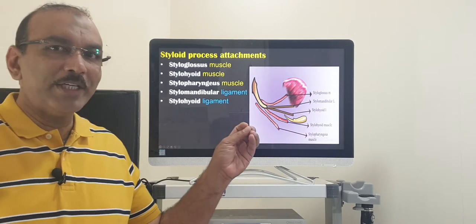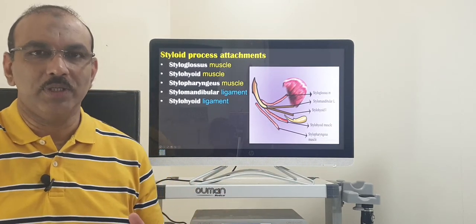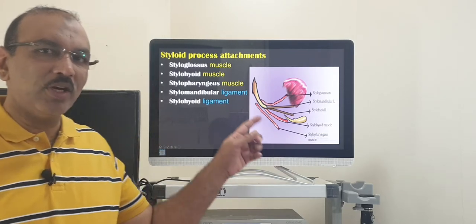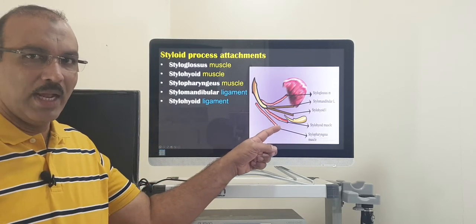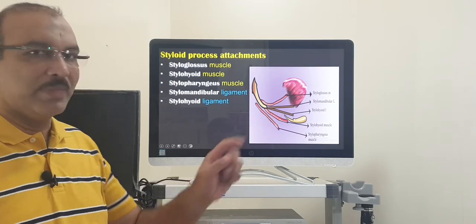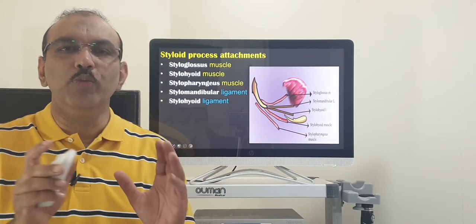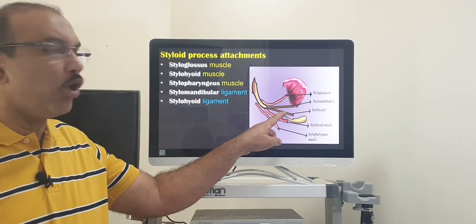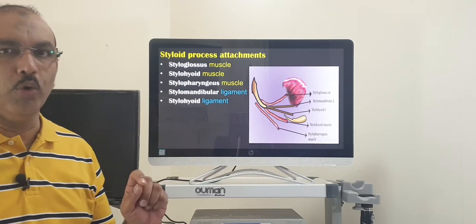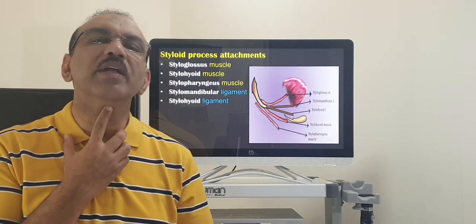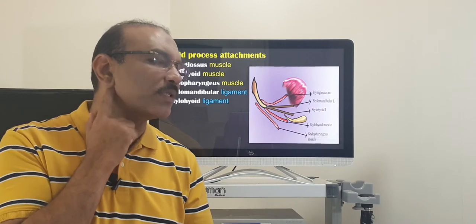Let me tell you the function of the styloid process and the structures attached to it. The styloid process has 3 muscles attached to it and 2 ligaments. A ligament is a structure which joins two bones. The stylohyoid ligament joins the styloid process and the hyoid bone. The hyoid bone is centrally placed, and the styloid process is seen here.